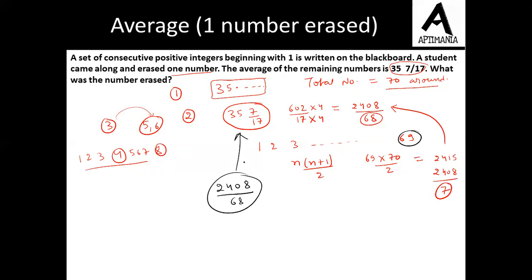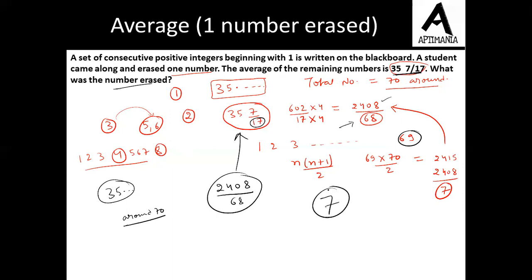So the two important points to solve this question: first, the average of consecutive numbers means the mid-value is around 35 point something, so the total number of terms must be around 70. Second, the denominator is 17, so the total remaining terms must be a multiple of 17 close to 70, which gives us 68, meaning the original set was 1 to 69. The erased number was 7. I hope this question is clear. Thank you.